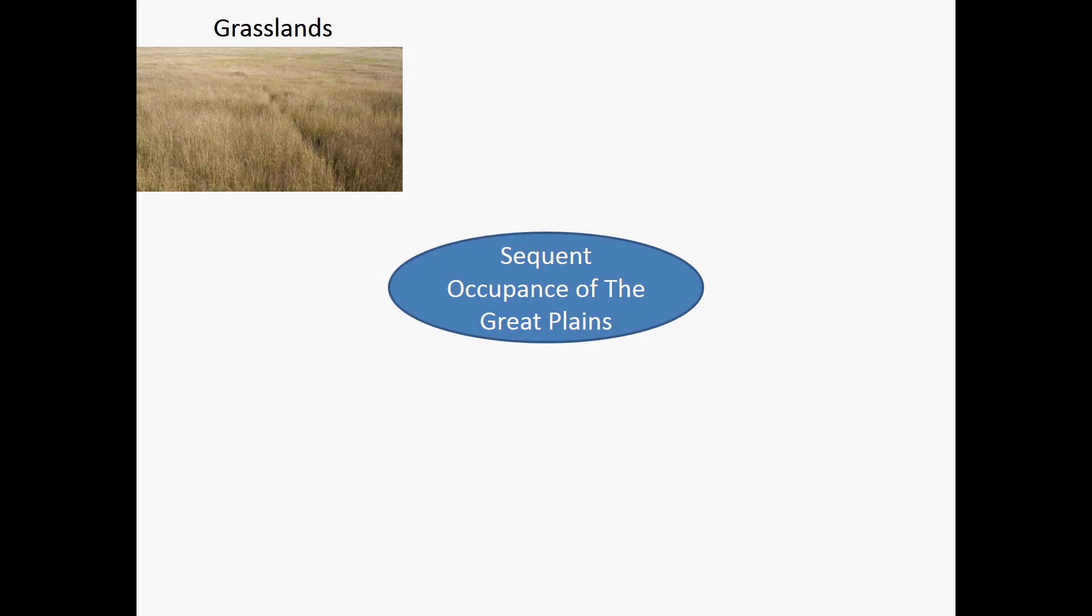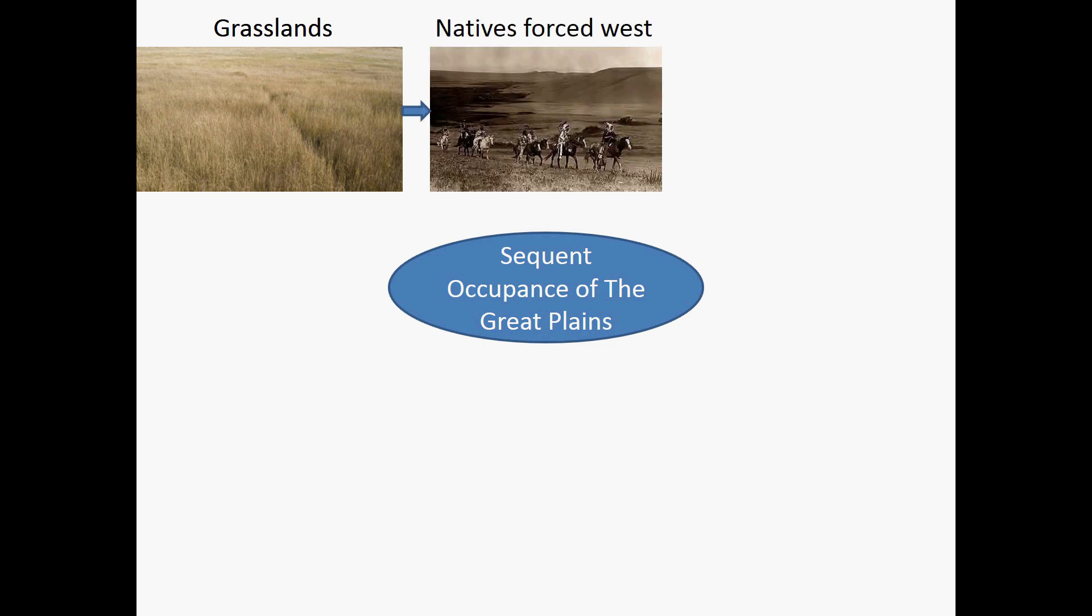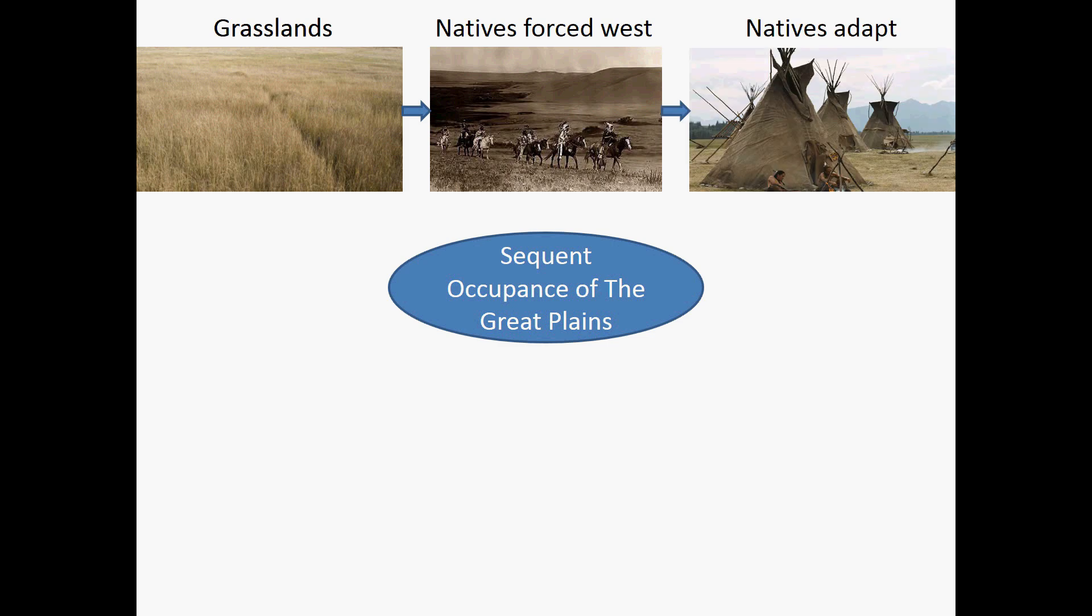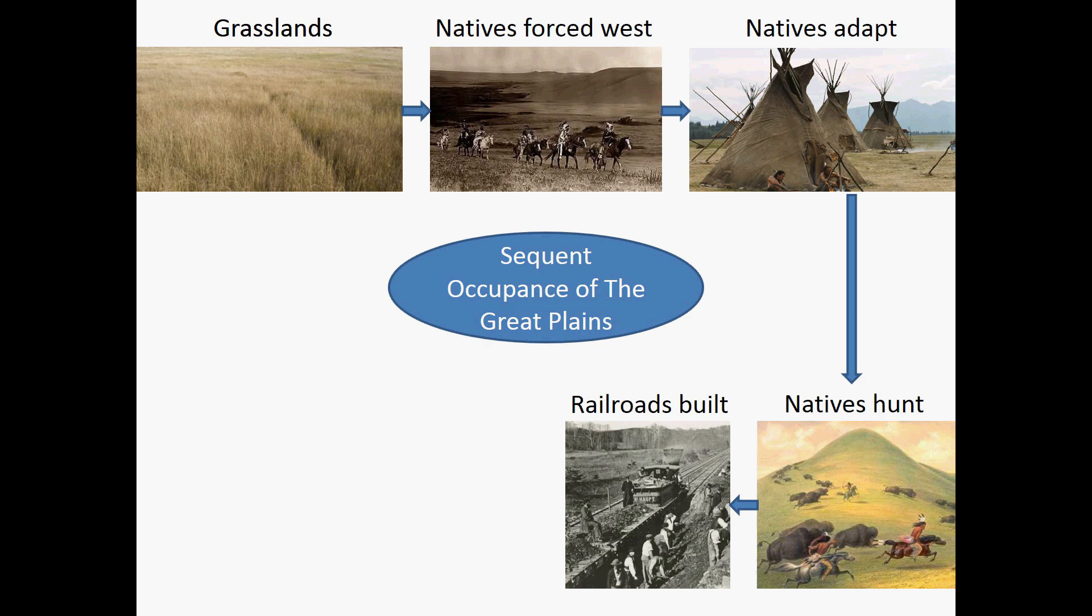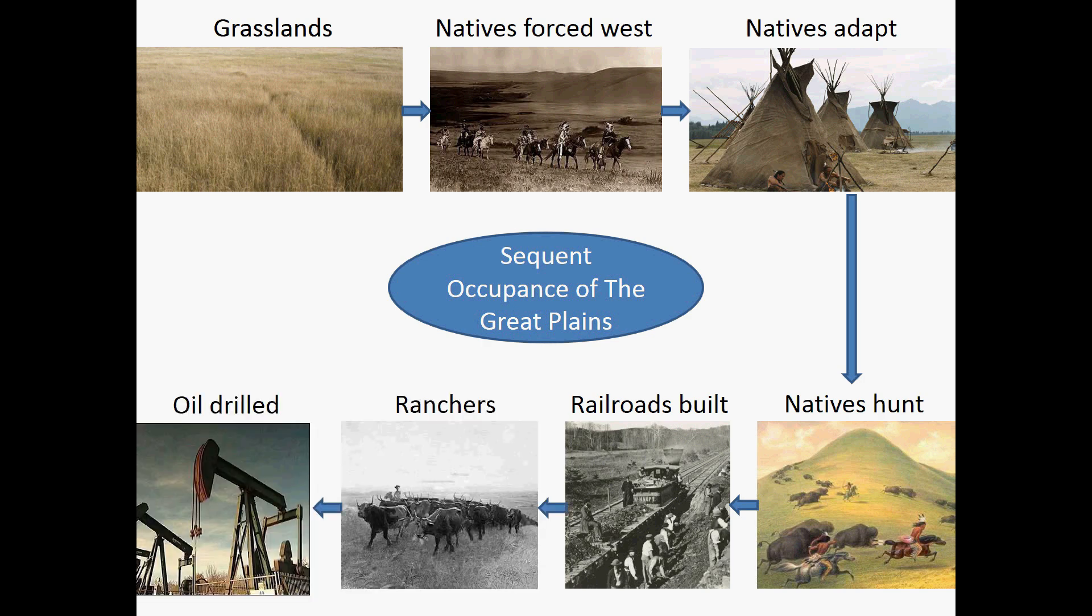Now we can look at it in another application. So we can look at this one area of the grasslands. Kind of before human. Then the natives come. The natives adapt to the land. The natives hunt on the land. Then the Americans start building railroads. They start ranching. They start mining. They start exploiting. So it's basically how has the land changed and who is occupying it. So it goes from unoccupied to one occupancy group to multiple occupancy groups and many different processes. That is sequent occupants.